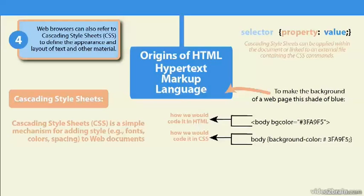Web browsers can also refer to Cascading Style Sheets, or CSS, to define the appearance and layout of text and other materials. Cascading Style Sheets is a simple mechanism for adding style — such as fonts, color, and spacing — to web documents. It's very similar to a program like InDesign or even Word that uses styles to lay out content. So you might have headline, body copy, photo caption — if you were working with a print document, it's the same basic concept.